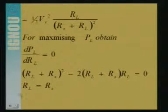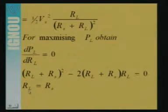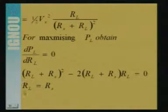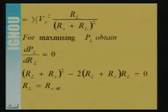This is the condition: for any network, power transfer through the load will be maximum only when the load resistance equals the internal resistance of the network. This is the only case when power transfer will be maximum. Here we considered RL and Rs for the DC circuit case.